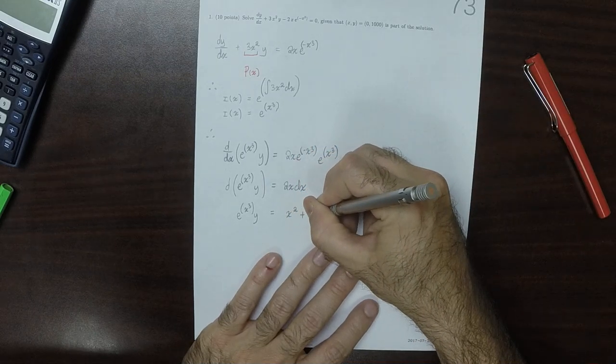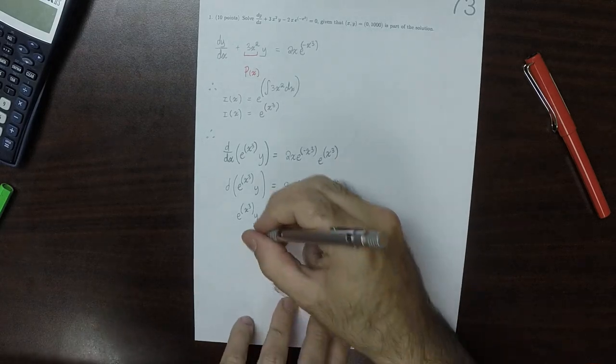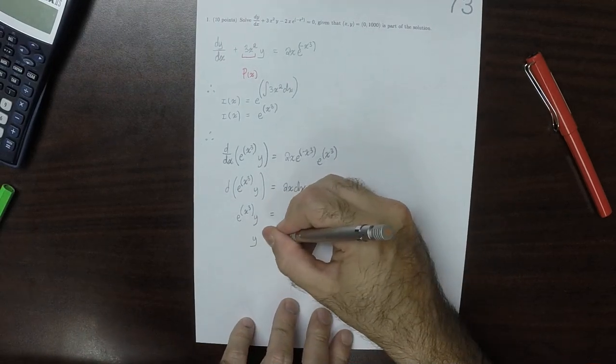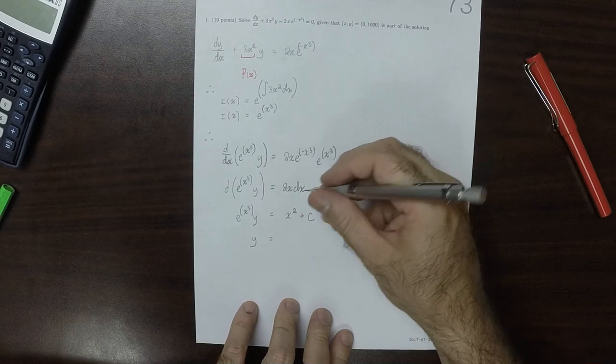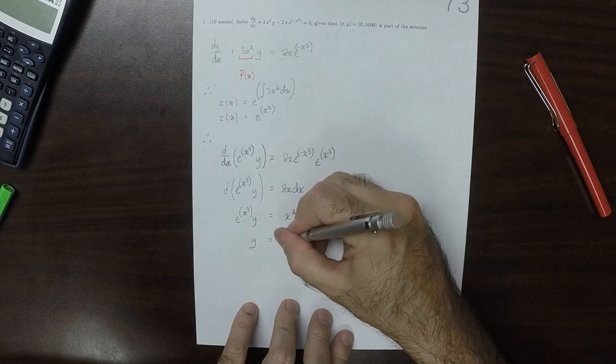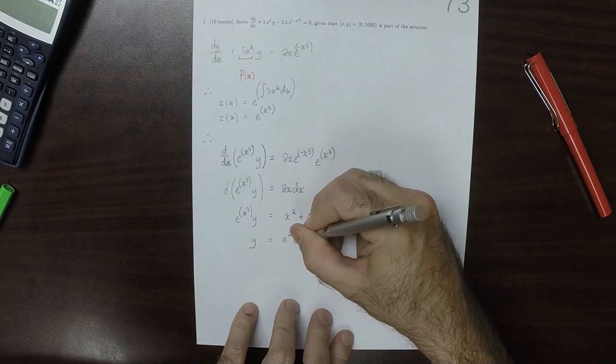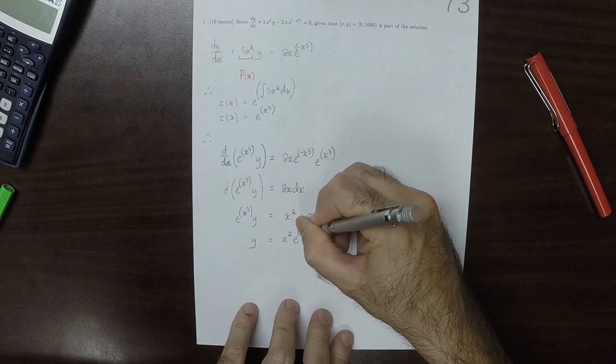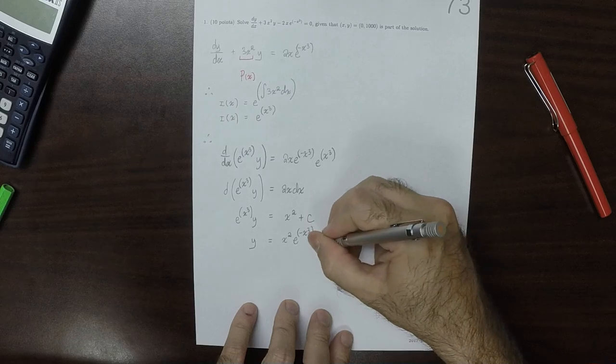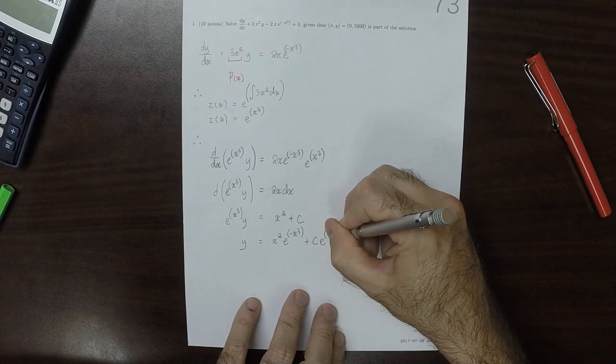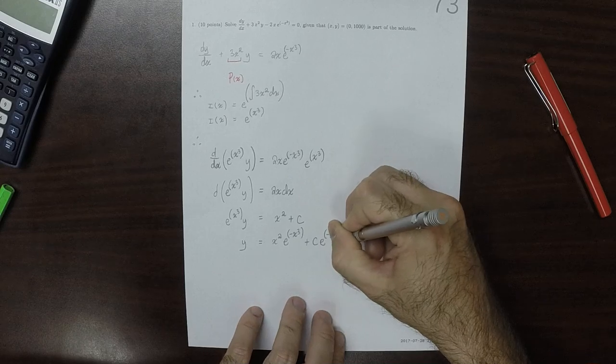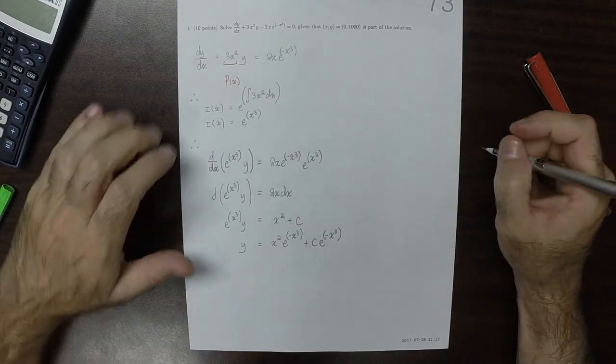Y equals x squared exponential negative x cubed plus C times exponential negative x cubed. And now we can figure out C by using the initial data.